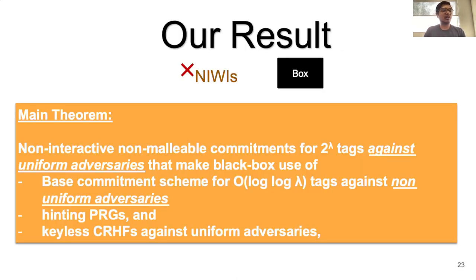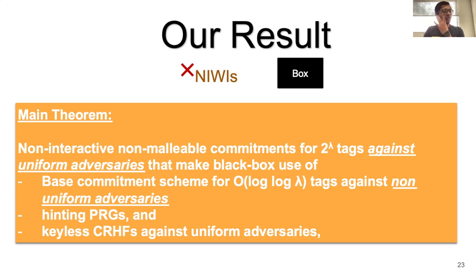This is our main result. There is a caveat: we go from security against non-uniform adversaries to security against uniform adversaries, and we also define a scheme going from log log λ to log λ. If you have something secure against uniform adversaries, you cannot directly recurse multiple times. In the paper, we define a new notion called computationally-enabled security — midway between non-uniform and uniform adversary security — which enables the recursive steps.